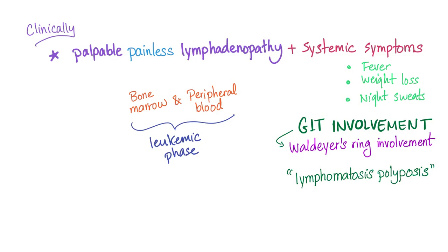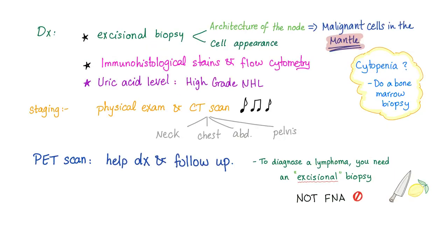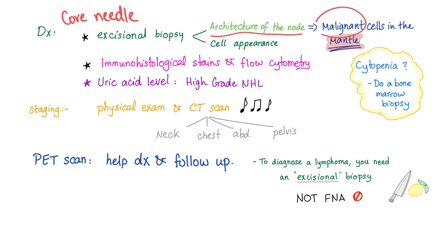GIT involvement is common in mantle cell lymphoma. To diagnose any lymphoma, use biopsy — never fine needle aspiration. Use excisional biopsy or core needle biopsy to detect the nodal architecture, which will show malignant cells in the mantle of the follicle. Immunohistochemistry will show CD5 positive. Staging is done by physical exam and CT scan or PET scan. If there is cytopenia, do a bone marrow biopsy to determine the cause.